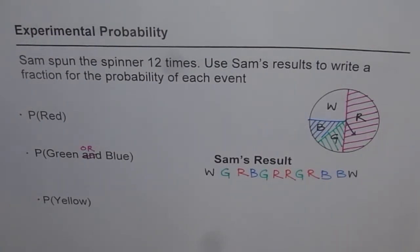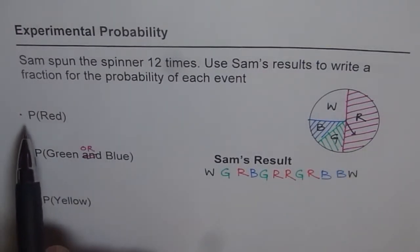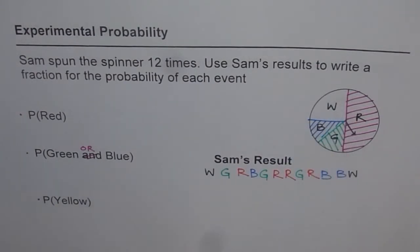Which we need to use to answer the question. Now I've seen some students jump into conclusions and say probability of getting red, they write an answer as half, which will be incorrect. So that would be theoretical probability. Now we're discussing experimental probability.